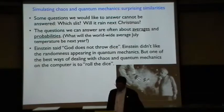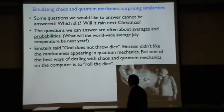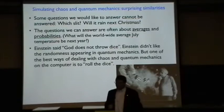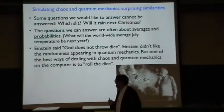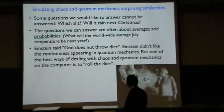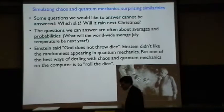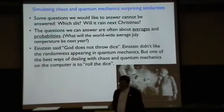The questions that we can't answer are important questions, but we can answer important questions about averages and probabilities. So, for instance, what will the worldwide average July temperature be next year? That's something that we might have a reasonable chance of predicting, or at least predicting some probabilities.